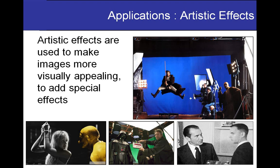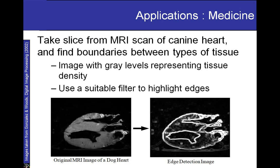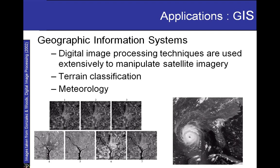Within medical imaging there are many applications of digital image processing. For example, a simple edge detection algorithm can detect the boundary between types of tissues in an image of a dog's heart. You will be able to do such detection within a few weeks after learning some basic techniques. Digital image processing techniques are also used in meteorology and geographic information systems, because satellite images often contain degradation and noise that must be removed to make those images more informative.